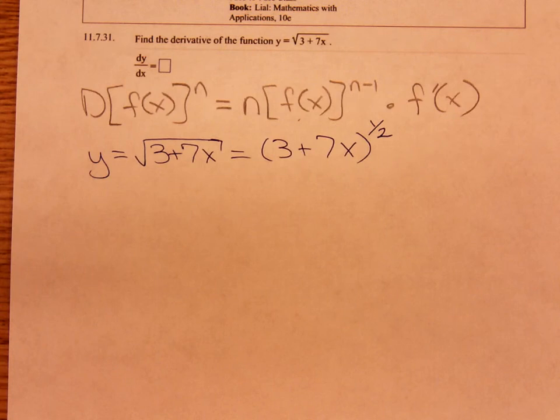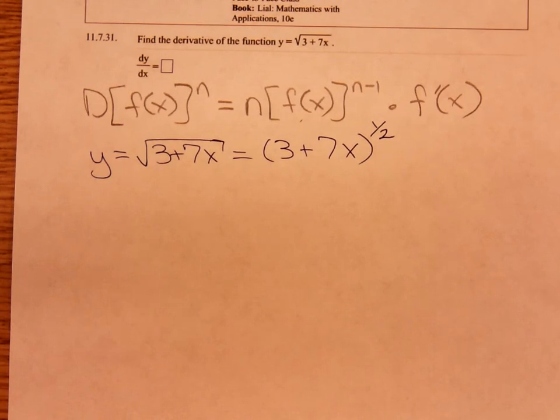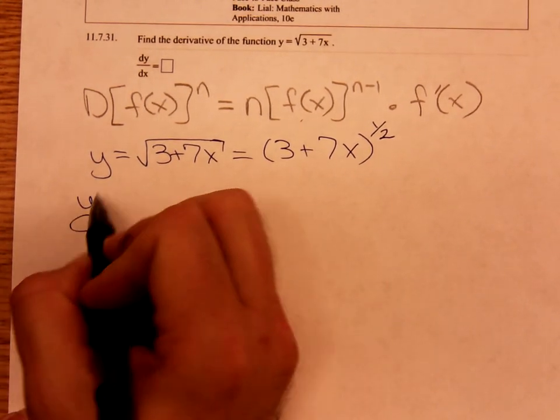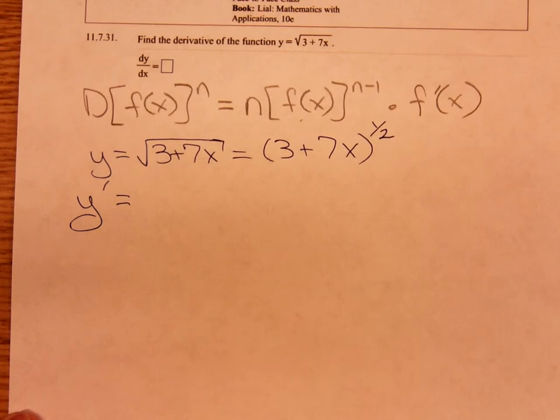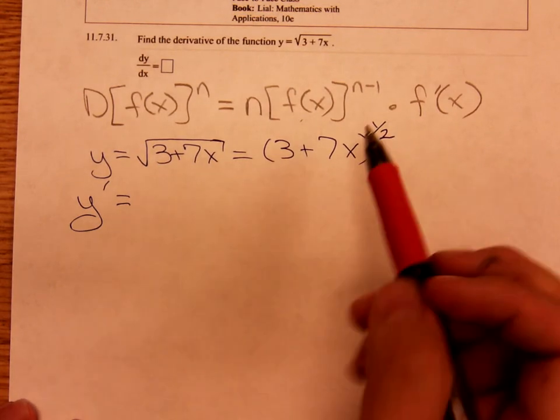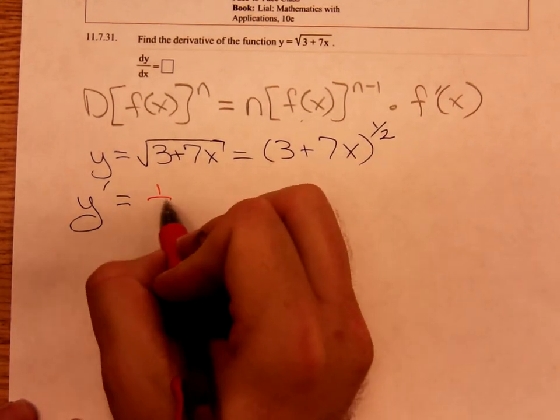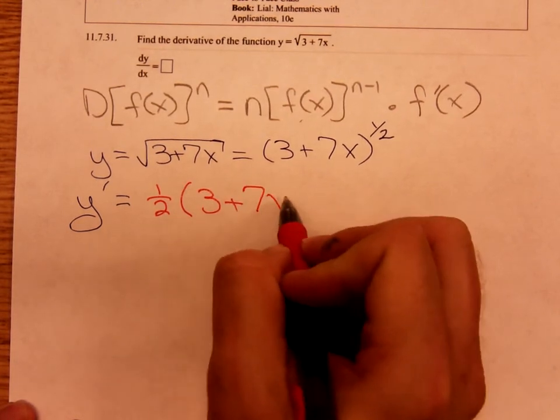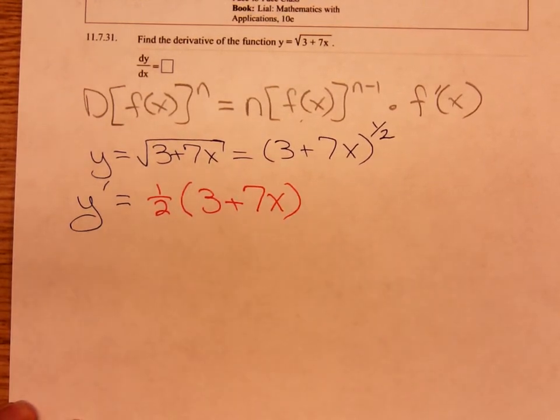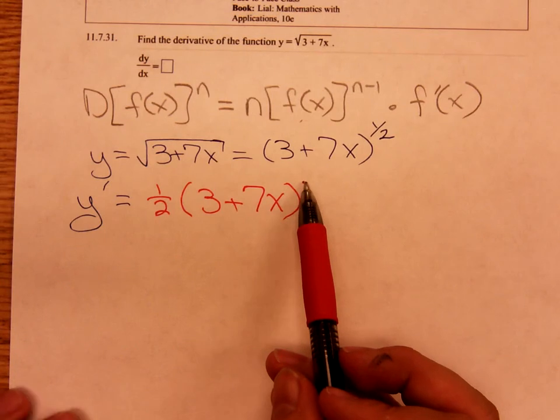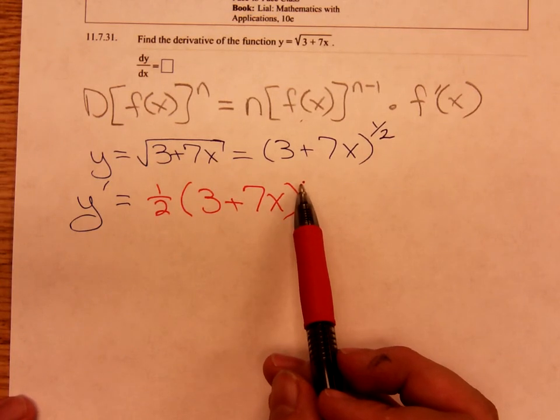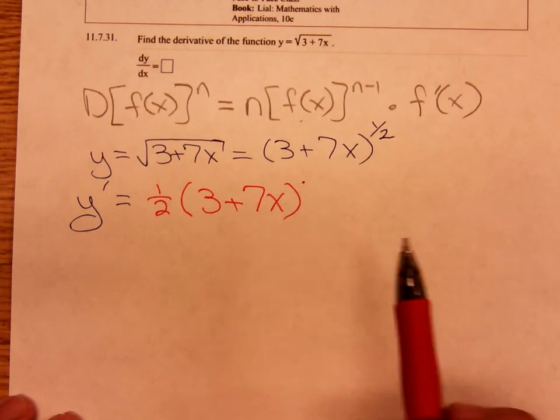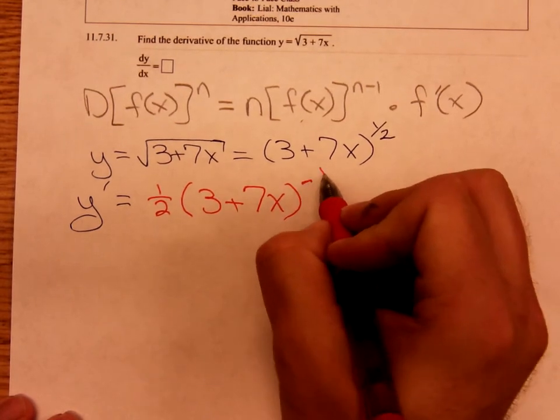And now we're ready to apply that generalized power rule. Y prime is equal to, what do we do first? You bring down the exponent, one-half. You leave the inside function as it is. To get the new exponent, you subtract one. One-half minus one is a negative one-half.